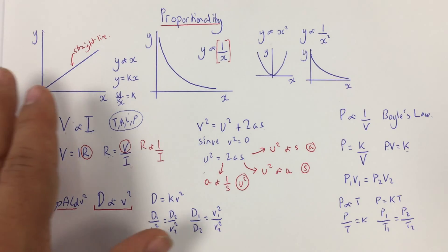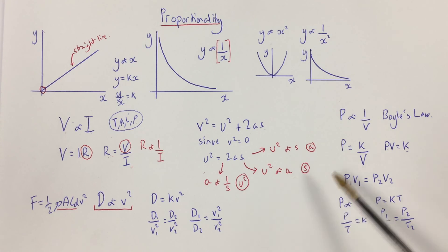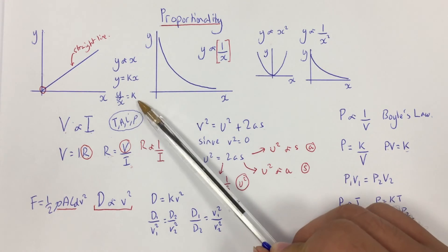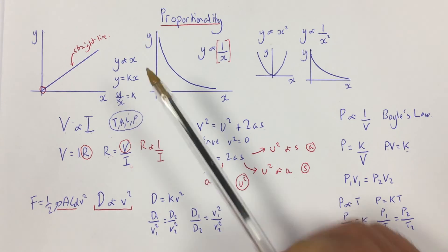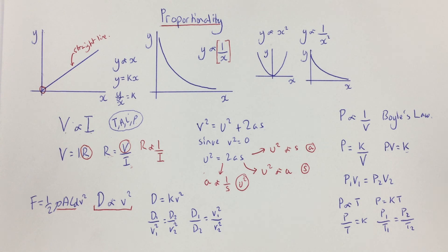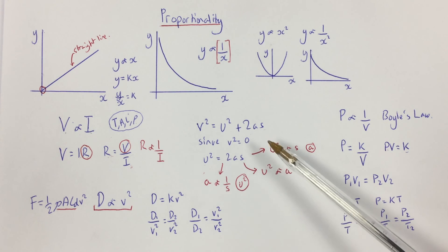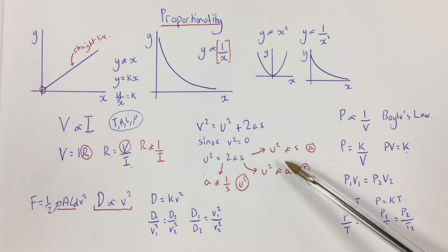In summary, proportionality requires you to recognise the shape of any proportionality from a graph, understand that equations represent relationships between quantities, and be able to start from a proportionality, add a constant to produce an equation, rearrange to find that constant, and then set up initial and final condition equations. You will encounter proportionalities given directly — such as drag proportional to V squared or Boyle's Law — but you also need to extract additional proportionalities from given equations, especially in explain questions.